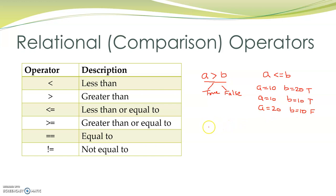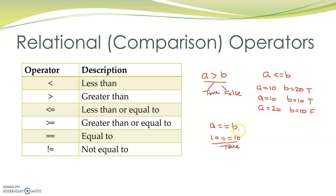For checking two values for equality, we write a equal equal to b. Suppose a is 10 and b is 10. Then this expression becomes 10 equal equal to 10 and this will return a value true. In all other cases, that is when the values of a and b are different, this expression returns a value false.